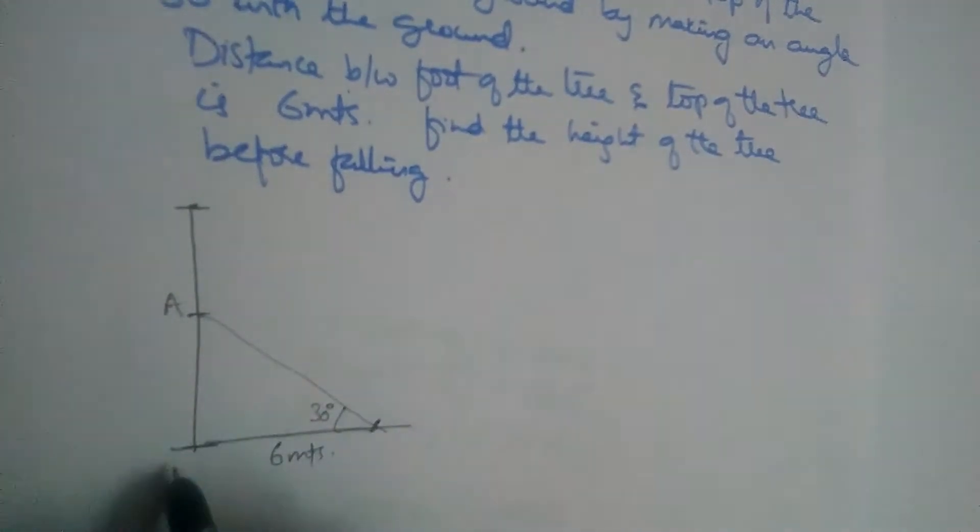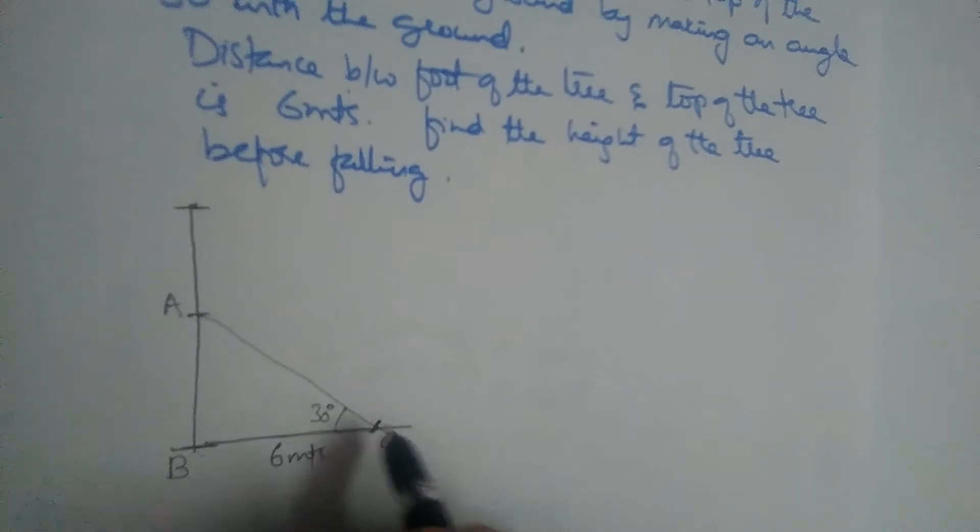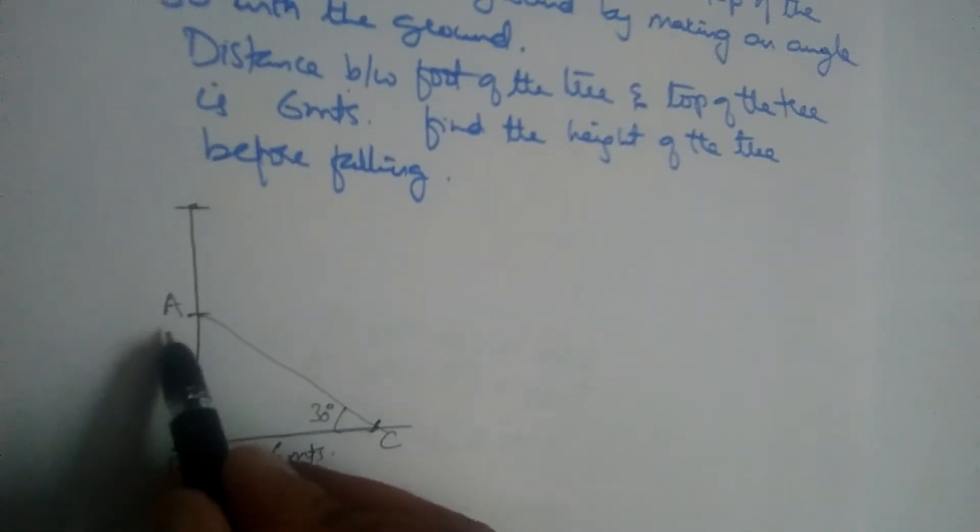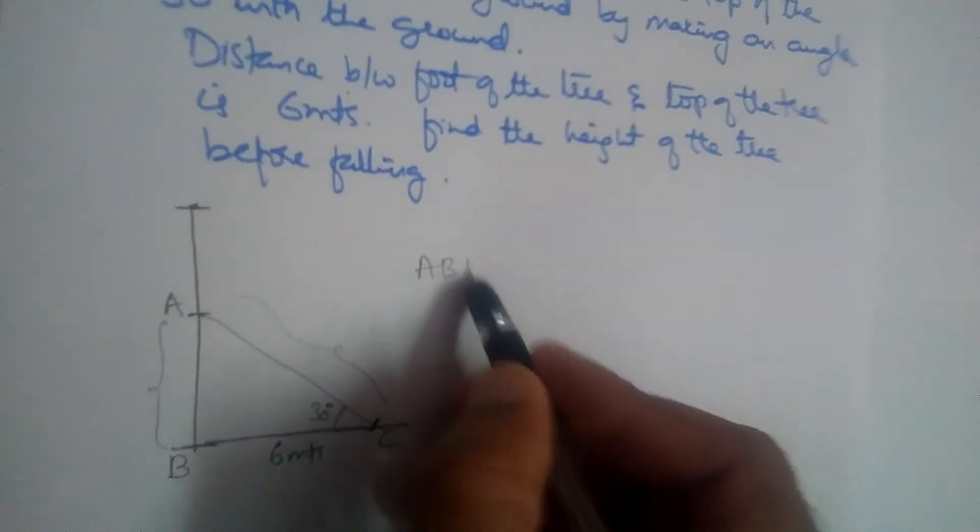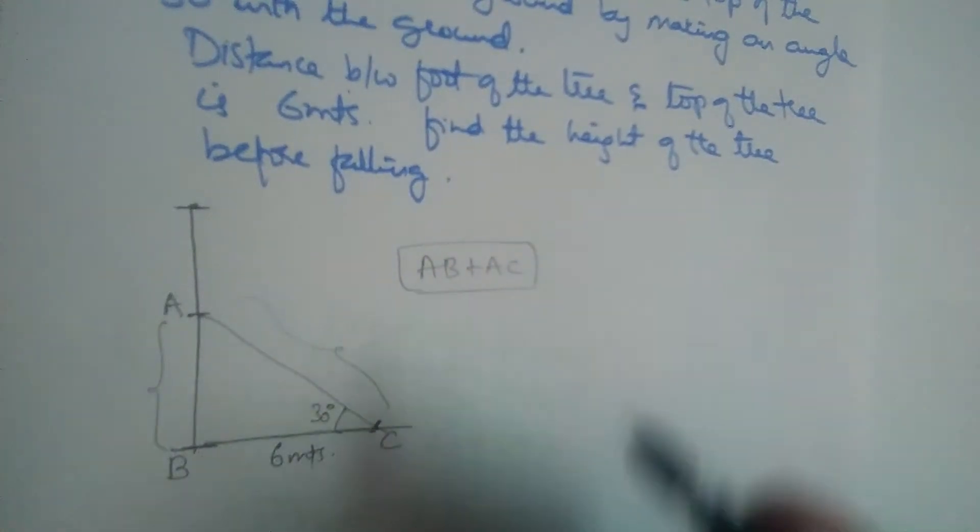So let us name this triangle A, B and C. So what is the original height of the tree? If you find this part AB and then AC and add it, AB plus AC, that will be the original height of the tree.